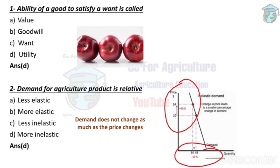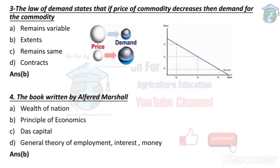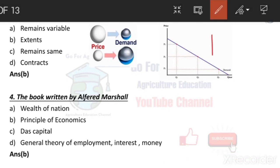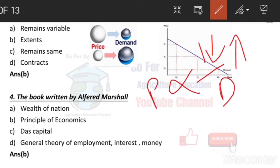The law of demand states that if the price of a commodity decreases, the demand increases. For example, if you go to a market and the price of potatoes decreases, you will buy more potatoes — demand is more. If the price increases, demand decreases. Price and demand are always inversely proportional.